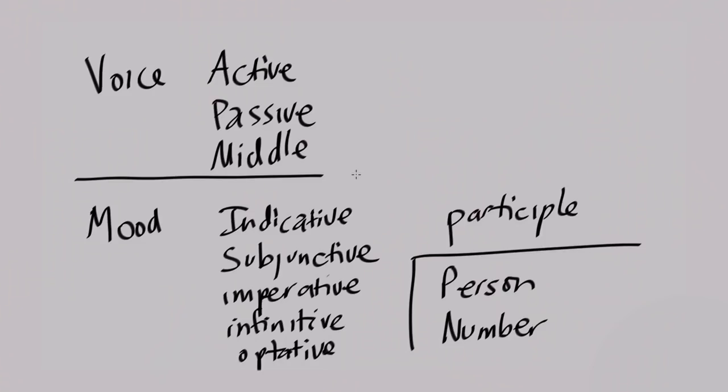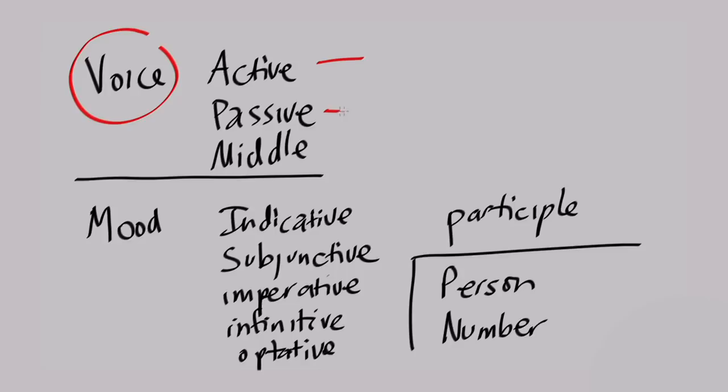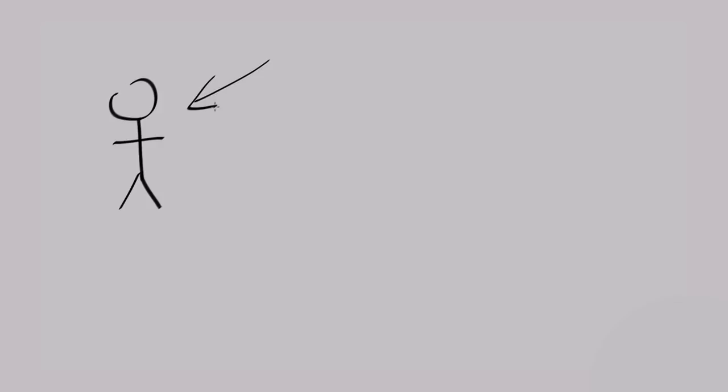Next we have voice. In Greek you have active, passive, and middle. This is important. Active: the subject of the sentence is doing the action. For example, 'I am walking' — the subject is acting. I'm talking to you right now — that's active.